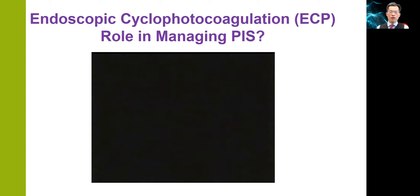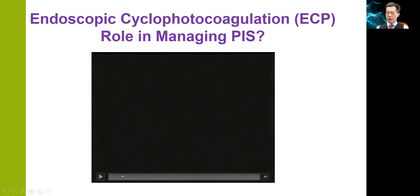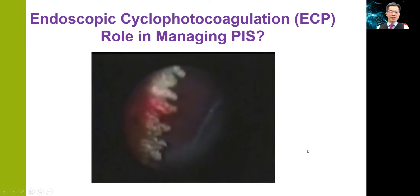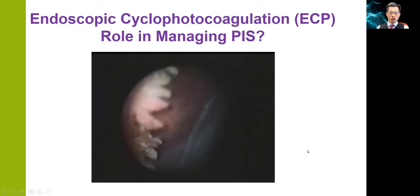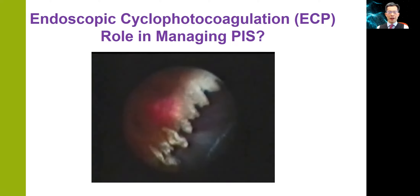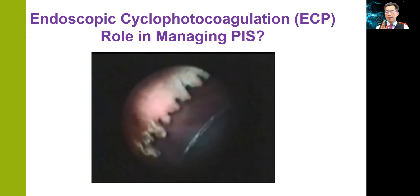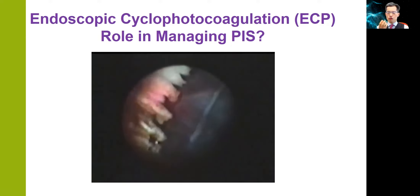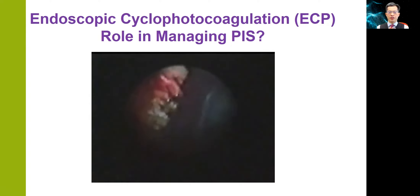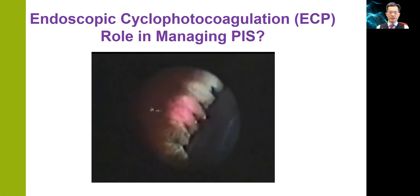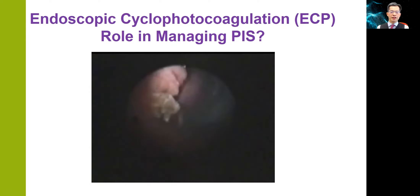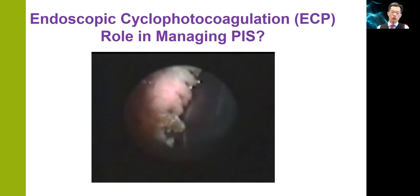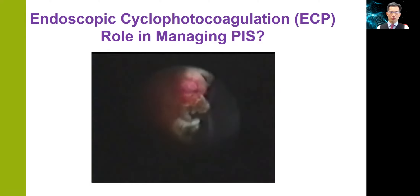Apart from argon laser peripheral iridoplasty, endoscopic cyclophotocoagulation may also have a role in managing plateau iris syndrome. This is a laser technique that involves the direct visualization of the ciliary processes with an endoscope in the anterior chamber. When we apply laser burns to the ciliary epithelium, you can see a contraction of all these ciliary processes. This has been shown to be effective in opening up appositionally closed angles in eyes with plateau iris syndrome.